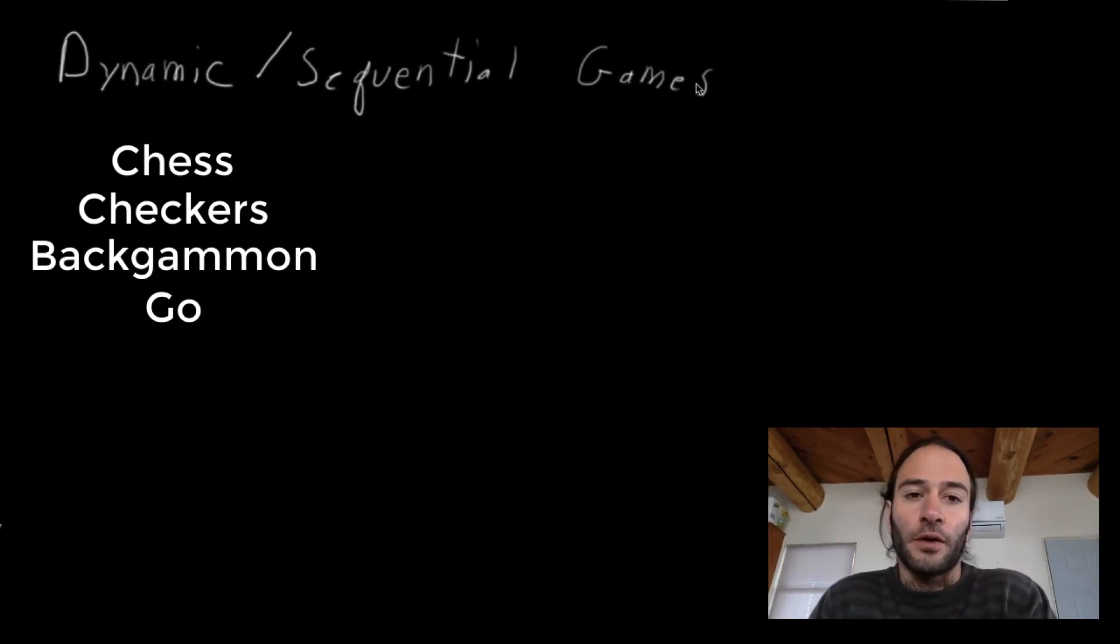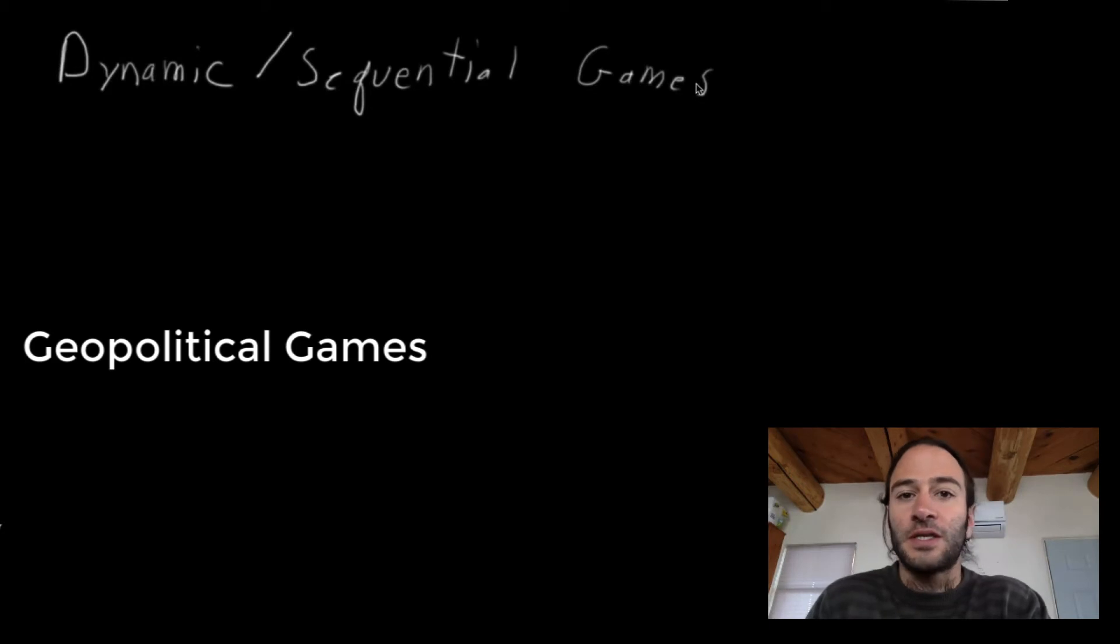Of course, there are other real-world examples of sequential games. Just one example you can think of: geopolitical games. If one country does something, then another country might see what that country did and choose their action based on what that country did in the first place. So you have country A acts and country B acts, then country A responds to country B, and so on. This would also be an example of a sequential game.